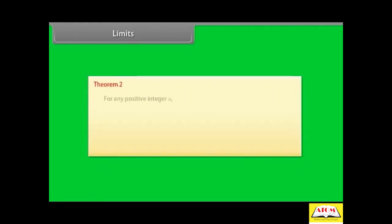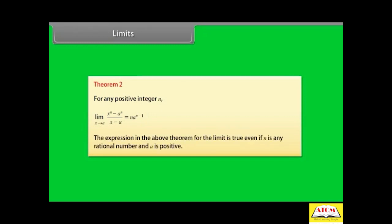Theorem 2. For any positive integer n: limit x→a of [(x^n - a^n) / (x - a)] = n · a^(n-1). The expression in the above theorem for the limit is true even if n is any rational number and a is positive.